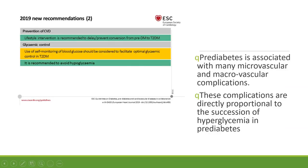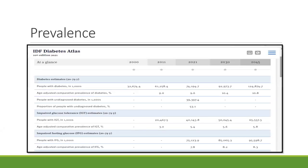Pre-diabetes is associated with macro and microvascular complications directly proportional to the duration of hyperglycemia. People with fasting glucose between 100 and 125 are at very high risk of cardiovascular disease — like a cat on the wall. Pre-diabetes statistics show that prevalence of undiagnosed diabetes, IFG, and IGT numbers are soaring and very troubling. It is time we acted before it is too late.